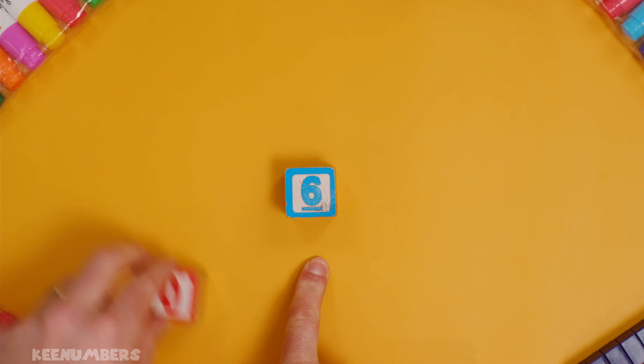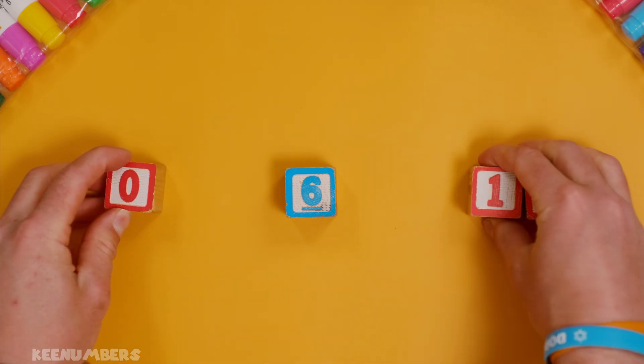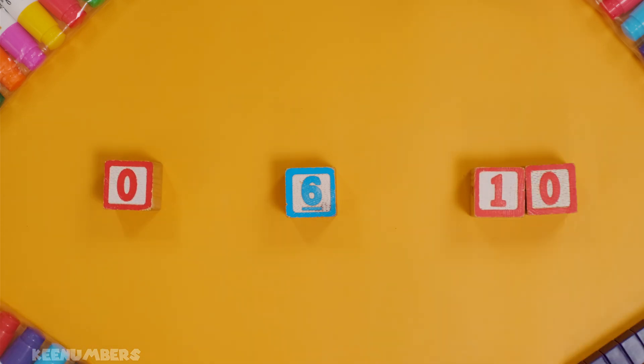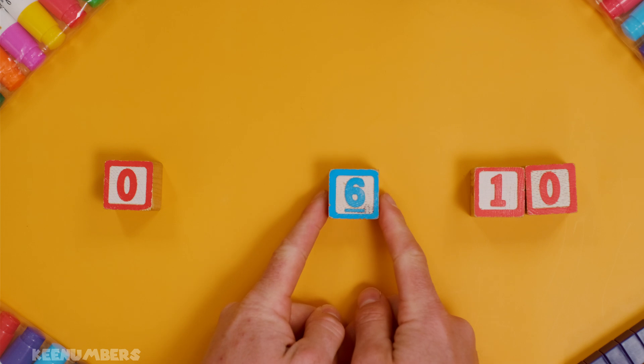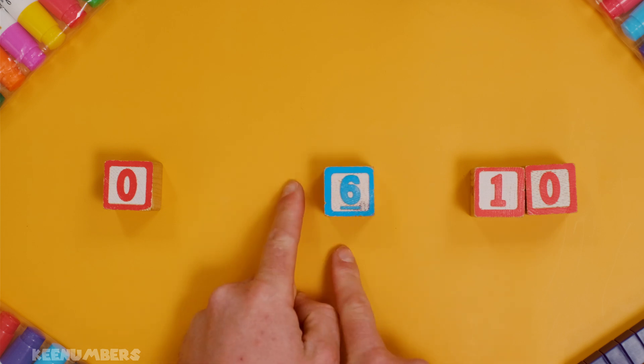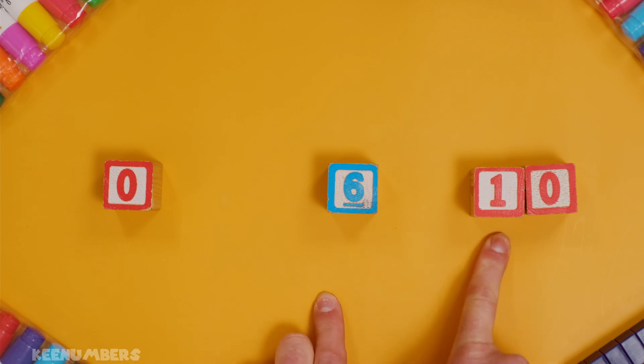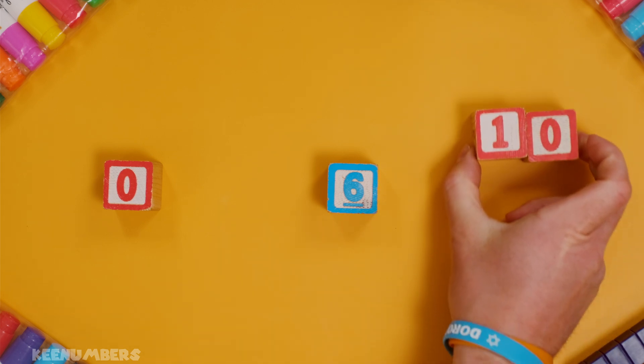What about six? Is it closer to zero? Or is it closer to ten? Yeah, it's closer to ten. Five, six, seven, eight, nine, ten! So we would say that six is not only closer to ten, but we can round six up to ten.